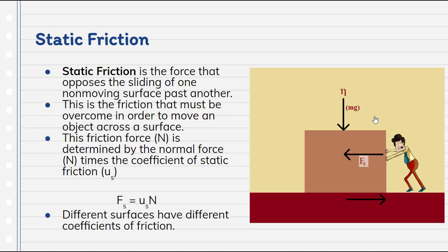So static friction is actually very similar to that of kinetic friction. The problem is, is that static friction is the force that opposes the sliding of a non-moving surface past one another. So you know how, like when you're about ready to slide something, like let's say a big piece of furniture, and it takes some energy to really get it to move. But once it starts moving, it's actually easier to move. Well, that's because you're overcoming the static friction. This is the friction that must be overcome in order to move an object across the surface. And again, it's given by the same formula as previously. We're just looking at the static force versus the kinetic force.